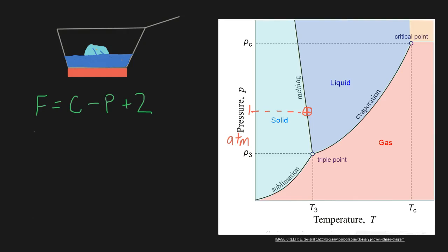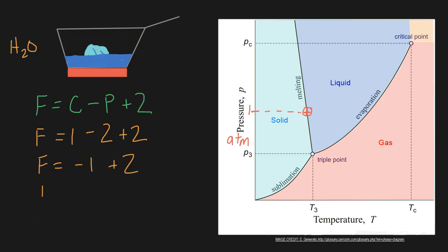So what does this look like with our phase rule? F equals C minus P plus 2. We still have one component — just water — so C is 1. Now we have two phases: water and ice, so P equals 2. F equals 1 minus 2 plus 2: F equals 1 — just one variable. We only need to define one variable to figure out the state of the system. We already know that variable: our pressure is one atmosphere. So we already know the temperature — we just look at the diagram to see where one atmosphere intersects the two-phase line.